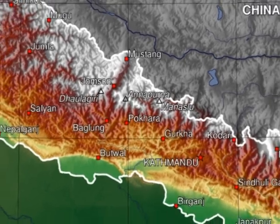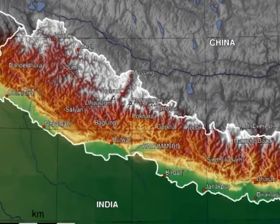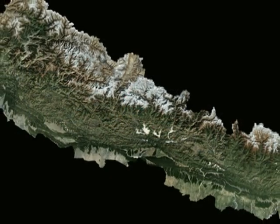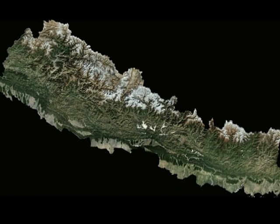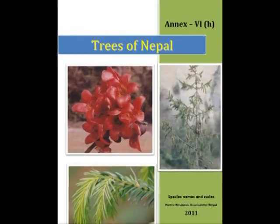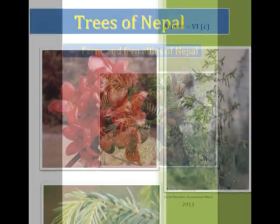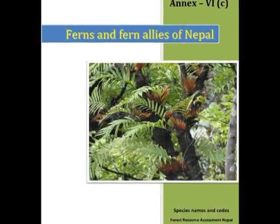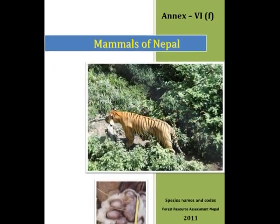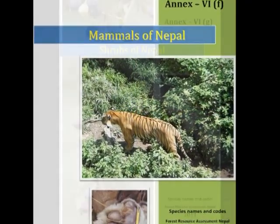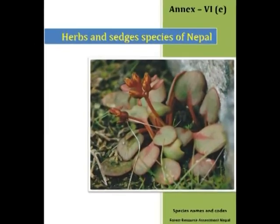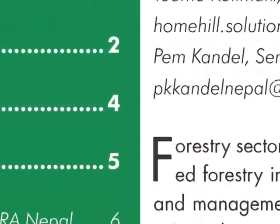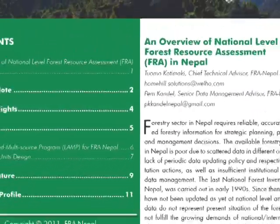Based on topographic maps, field data, and biometric models, statistical data of Nepali forests has been calculated. Previous inventories have produced a lot of publications to present results and published research articles. The FRA Nepal project is still in an early phase and has prepared only a few publications, either independently or together with partners.